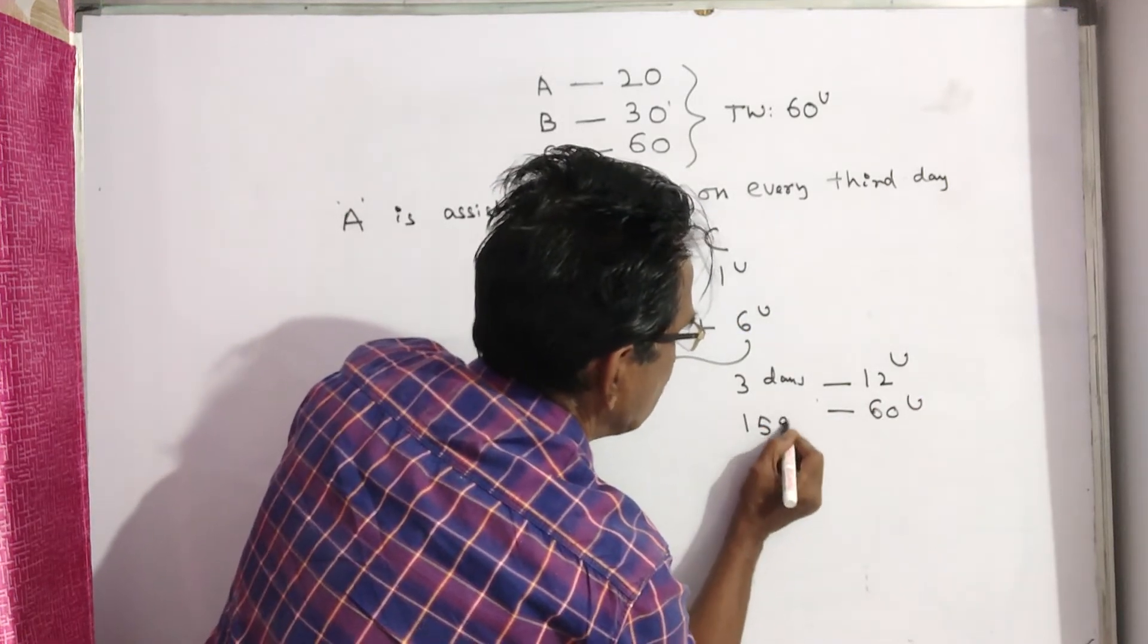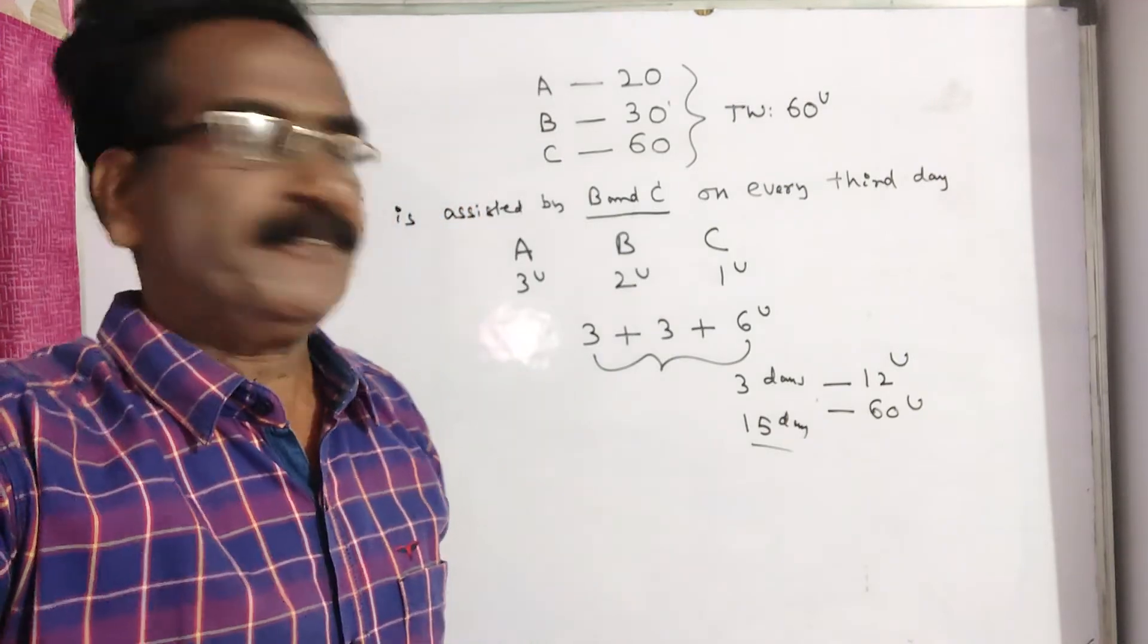60 divided by 12 is 5. 5 times 3 is 15 days. So the total work will be completed in 15 days.